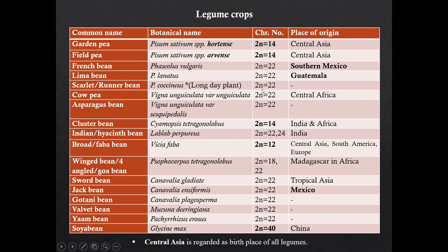In case of chromosome number, most of the legume crops have chromosome number 22, except garden pea, cluster bean and broad bean. In garden pea, chromosome number is 14. In cluster bean also, chromosome number is 14. In case of broad bean (faba bean), chromosome number is 12, which is the lowest among the legume crops. In case of origin, Central Asia is regarded as the birthplace of all legume crops.